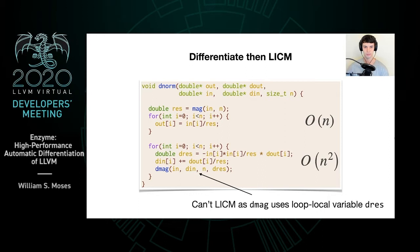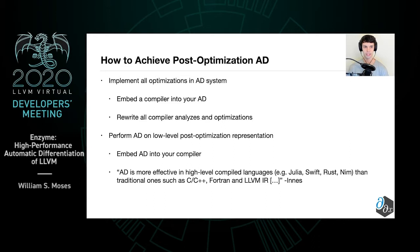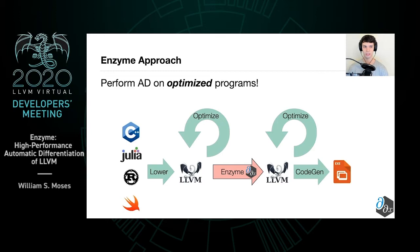As a consequence, it's quite desirable to run AD after first running optimizations. There are two techniques one can use to do this. The first is to effectively embed a compiler into your AD system and rewrite all compiler analyses and optimizations in said AD system. The second is equivalent to embedding AD into your compiler and instead performing AD on the low-level post-optimization representation. It's historically thought that AD is more effective in high-level languages rather than traditional ones such as LLVM IR, so this latter approach hasn't been explored so much. Our approach is to perform AD on optimized programs by performing AD inside of the low-level LLVM representation.